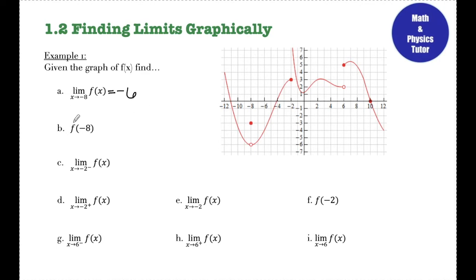For part b, they asked me to find f of negative 8. This is asking where the function is defined at x equals negative 8. At x equals negative 8, this function is defined at negative 3. So it is possible to have a limit as x approaches some number and the value of the function at that same number be different. This is what causes a discontinuity — here I can see a removable discontinuity or a hole that's then filled in at the point negative 8, negative 3.